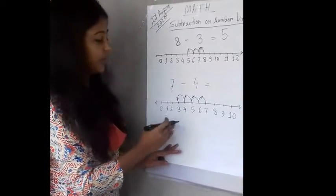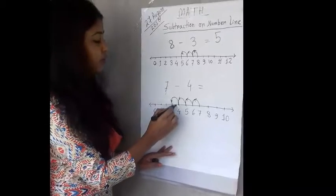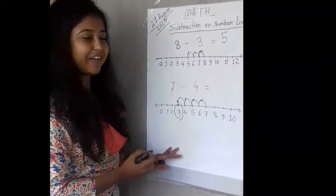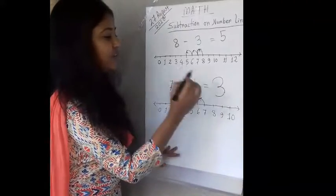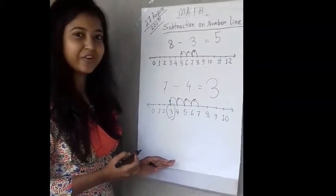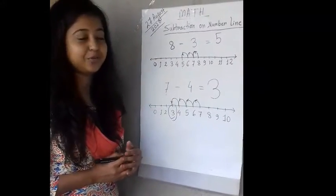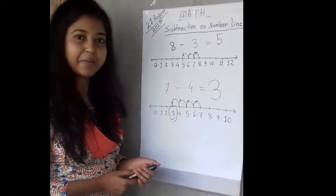Now we will see which number we got. We got number 3. So our answer is 3. 7 minus 4 is 3. So this is how you can do subtraction on a number line.